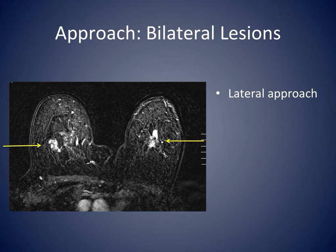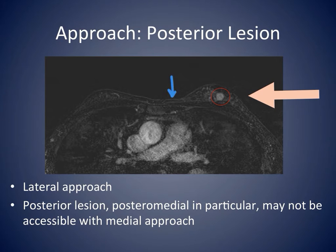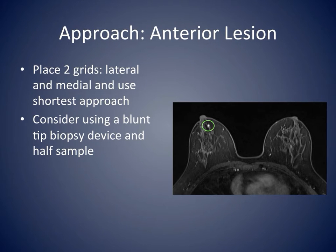Bilateral breast biopsies are usually performed with a lateral approach. Imaging is performed simultaneously and sampling sequentially, one breast after the other. For a posterior lesion, the lateral approach is easiest. Posterior and posteromedial lesions in particular may not be accessible with a medial approach due to the chest wall, sternum, and inability to mobilize the medial breast in the coil. For an anterior lesion, consider placing two grids and using the shortest approach, and also consider using a blunt-end needle and possibly half-sampling to overcome the limited breast thickness in that location.